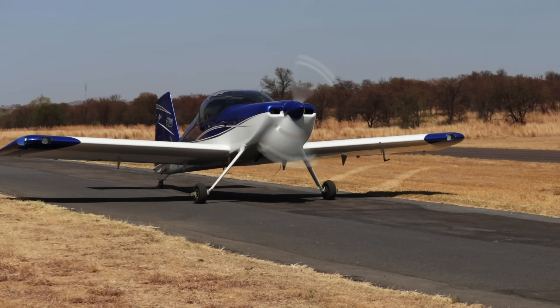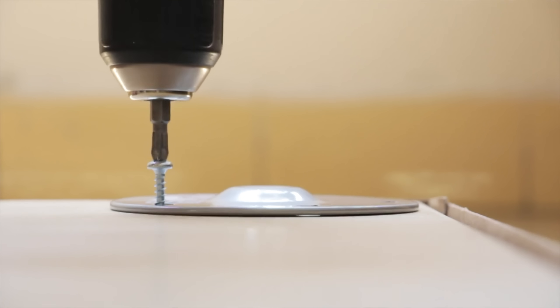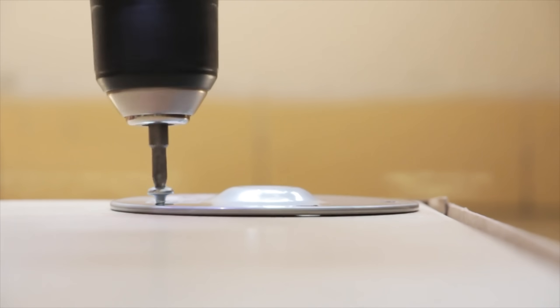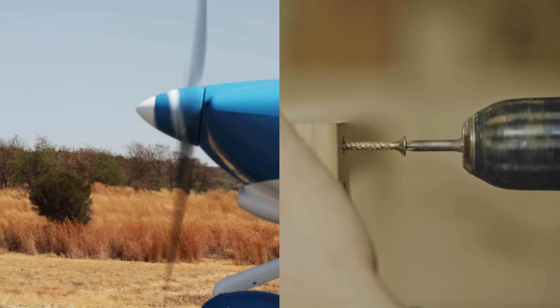A propeller converts rotational motion into thrust, much like a screw converts rotation into linear motion. But while they seem similar, the way they generate thrust is fundamentally different. A propeller doesn't pull itself through the air like a screw, instead it accelerates air rearward.